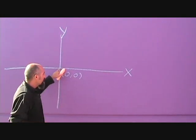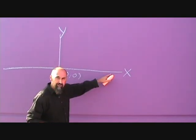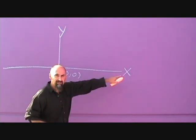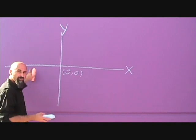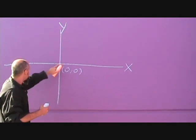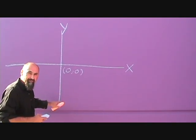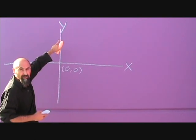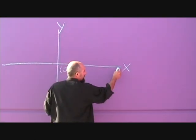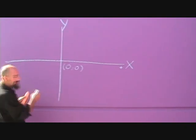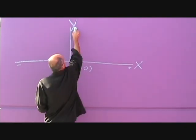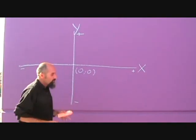And from here, if you go off in this direction, you're going to go in the positive X direction. If you go off in this direction, you're going to go in the negative X direction. This way, you're going to go in the negative Y direction. And this way, you're going to go in the positive Y direction. So, you can think about this as positive X, negative X, negative Y, and positive Y.